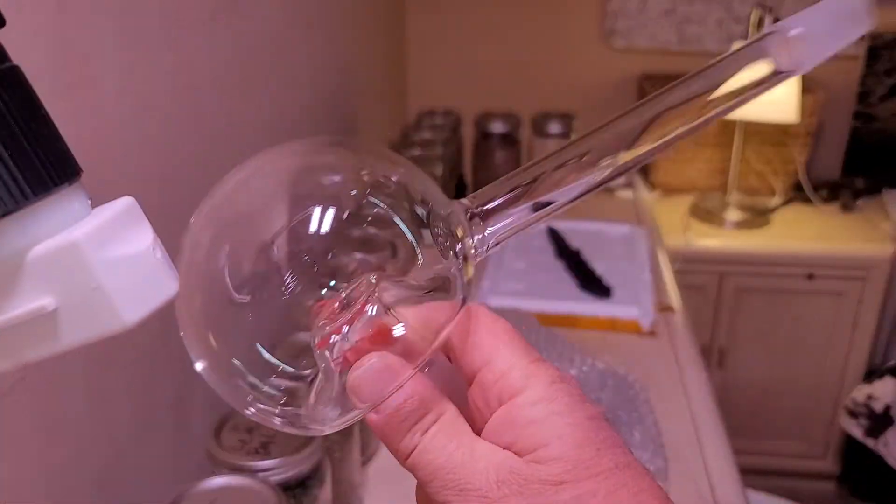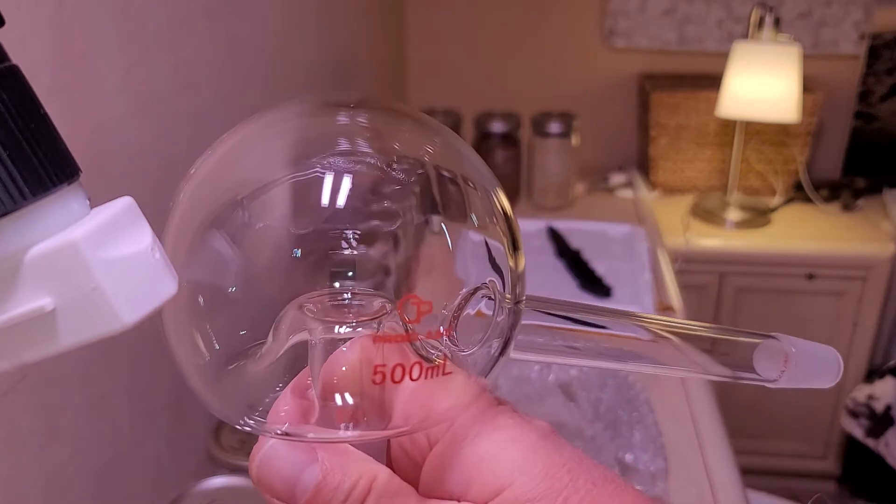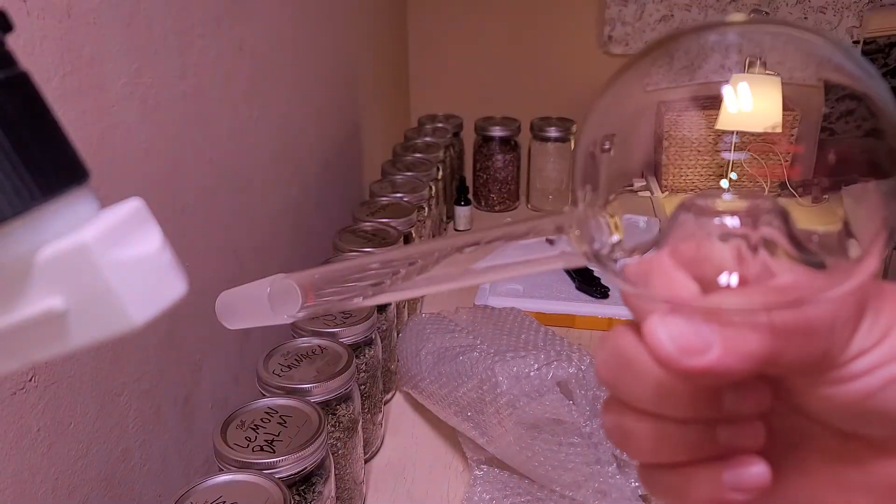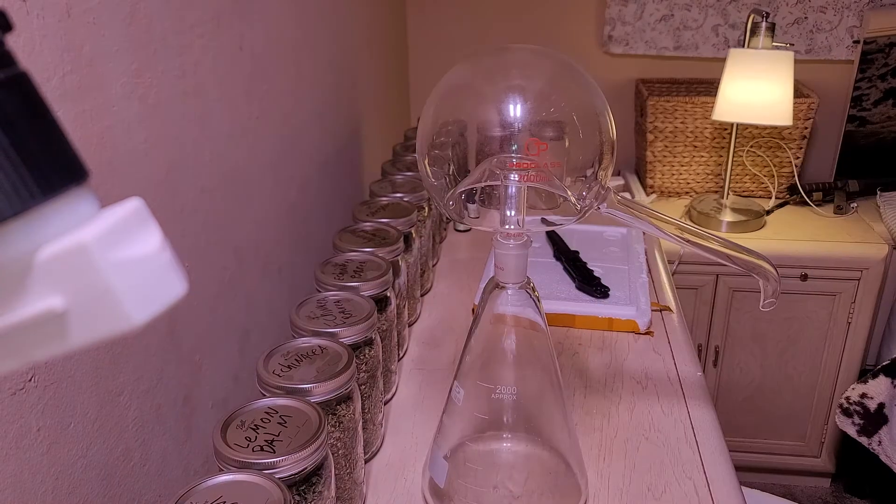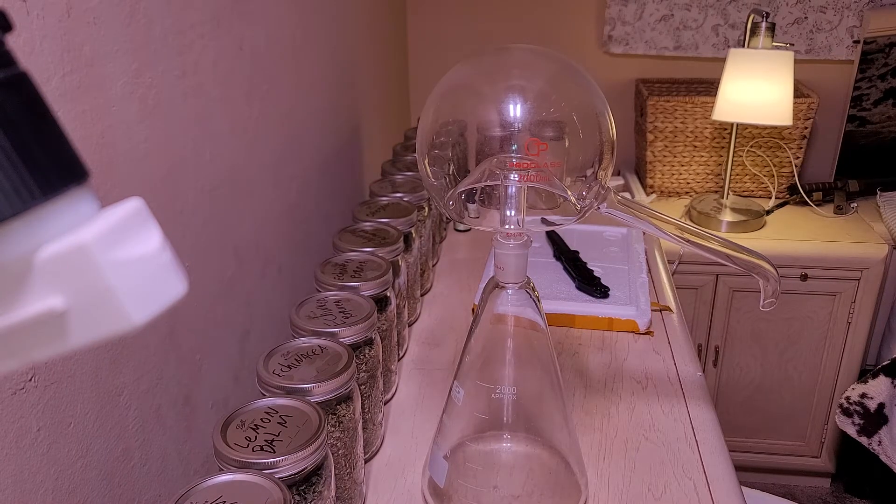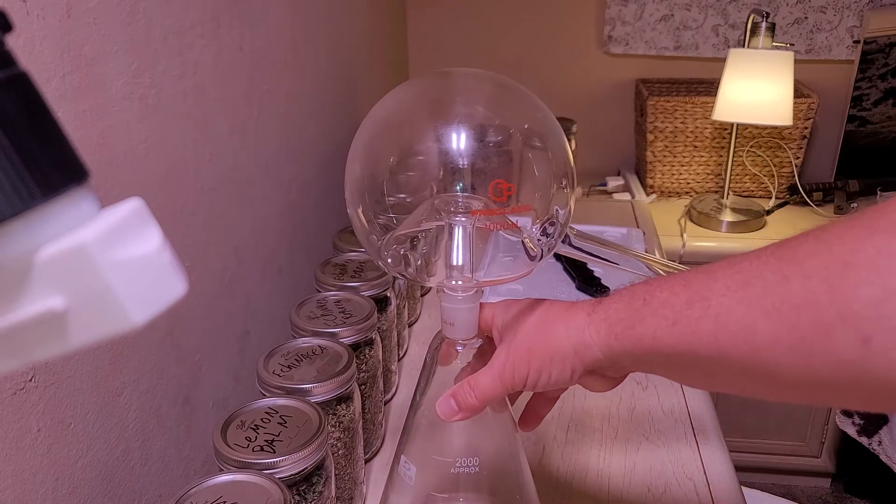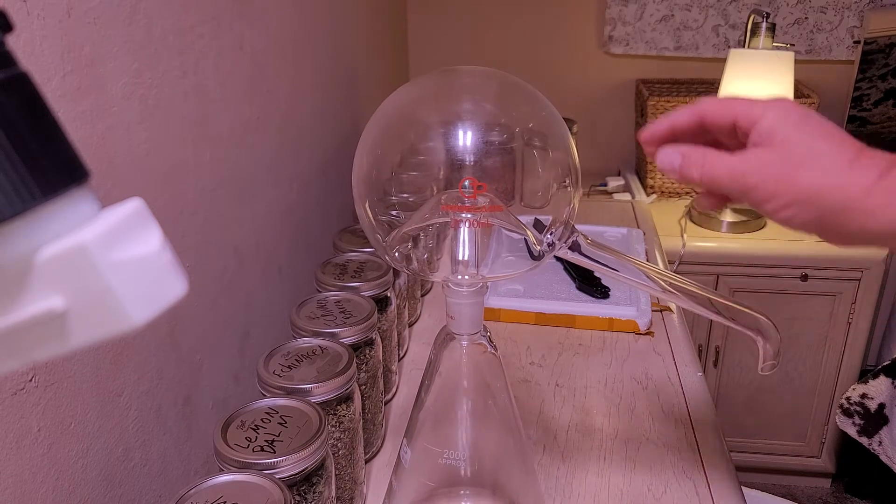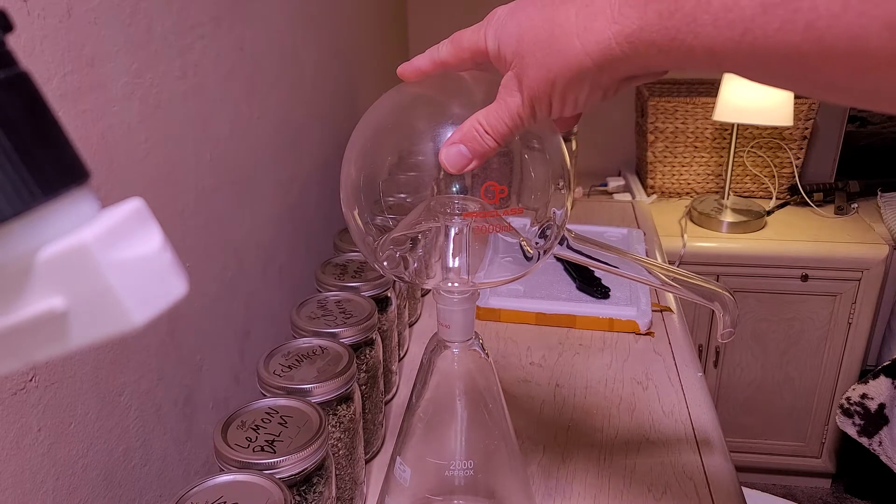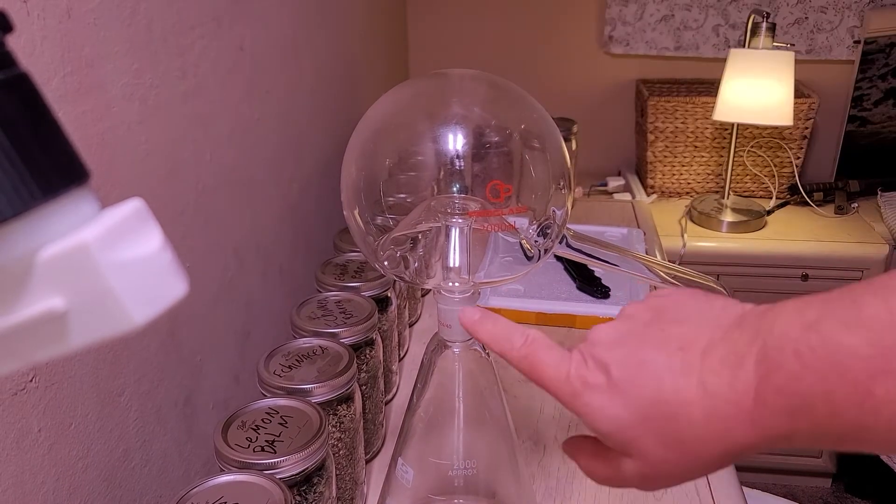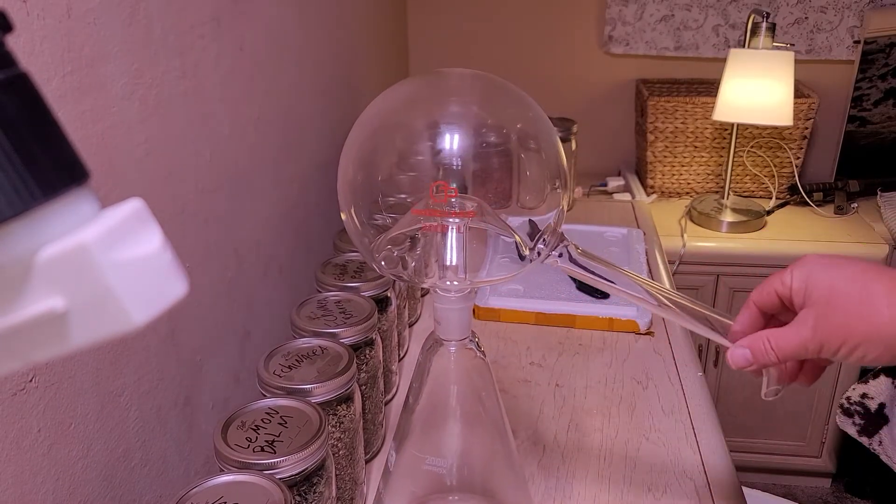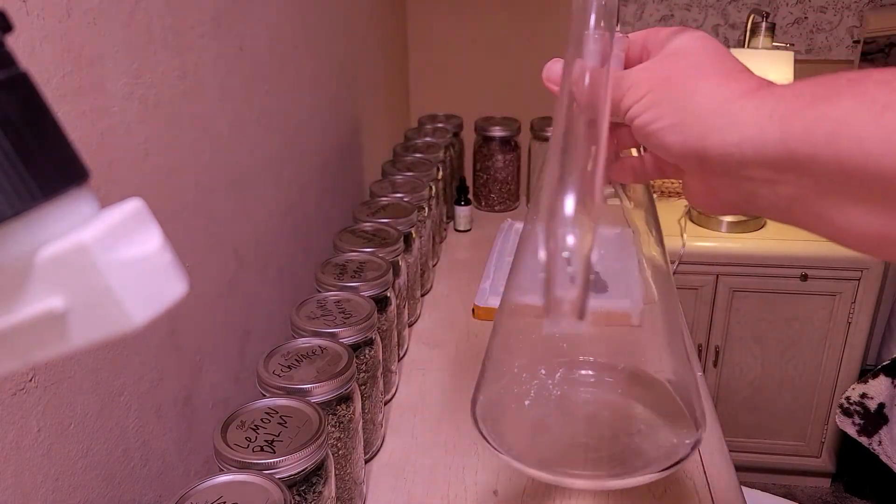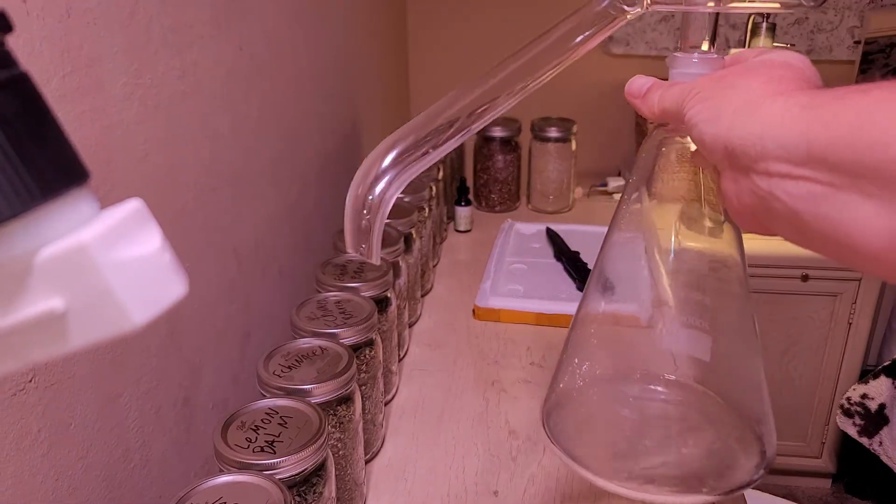I have another one that I purchased previously that I will show. So this is the other alembic that I have. This one has a 2000ml distillation head. It has the drip rail, and this one does not have the ground glass joint on the end. This one is designed to drip.